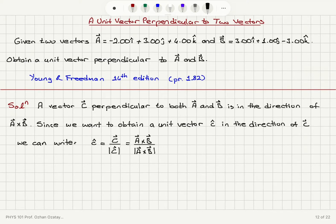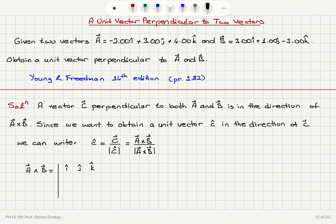The problem boils down to how to calculate the cross product between two vectors a and b. Vector a cross vector b is found by evaluating the following determinant: first row i-hat, j-hat, k-hat unit vectors; second row x, y, and z components of vector a, which are minus 2, 3, and 4; third row x, y, and z components of vector b, which are 3, 1, and minus 3.